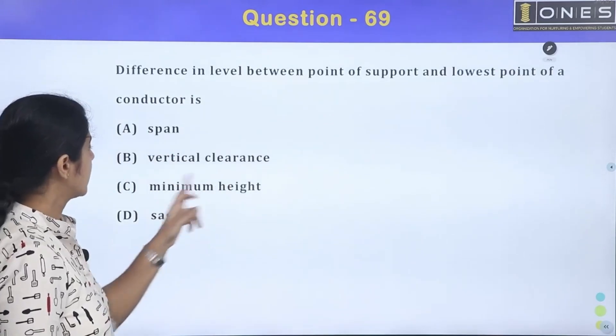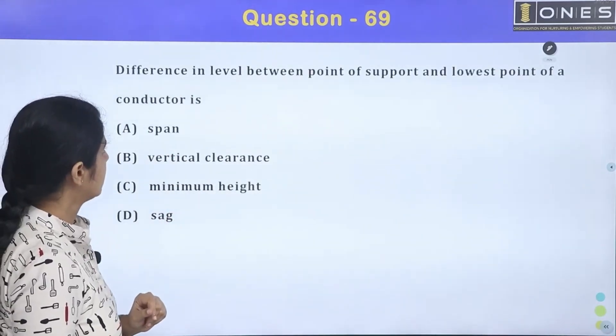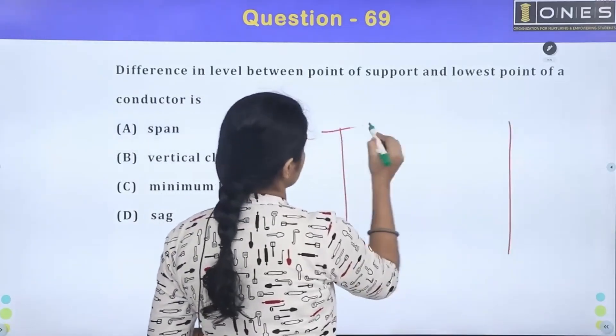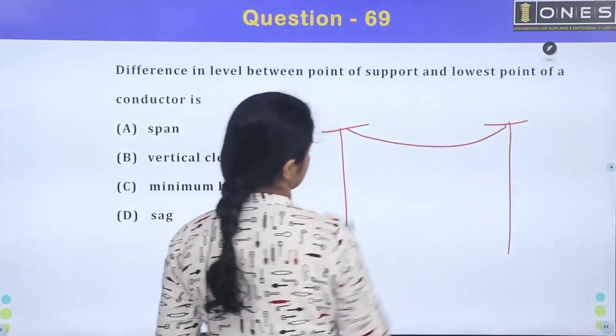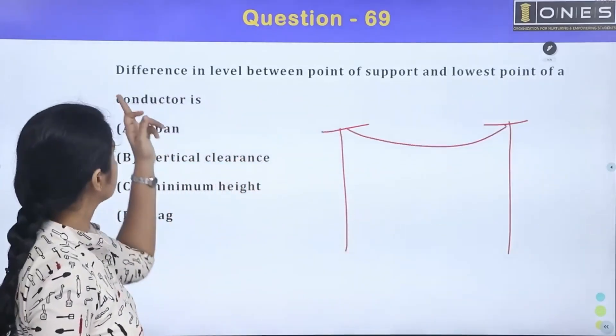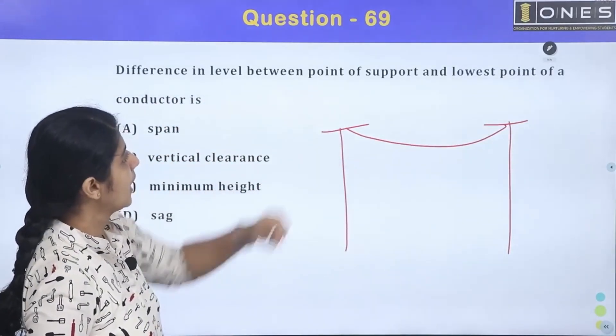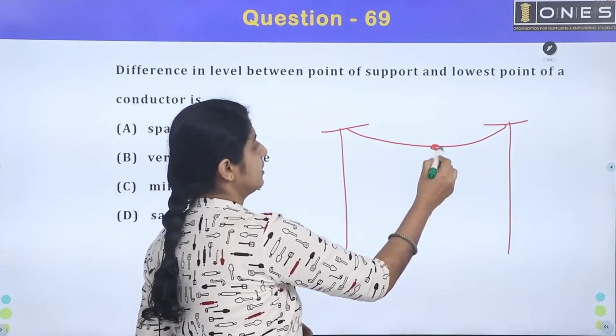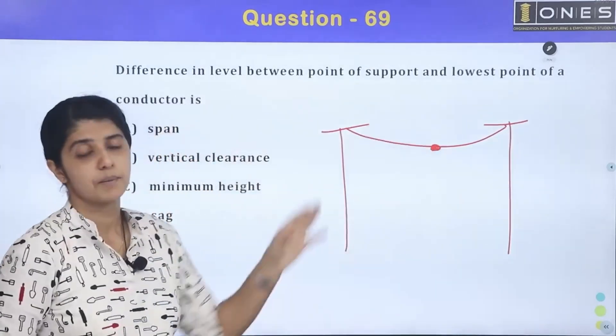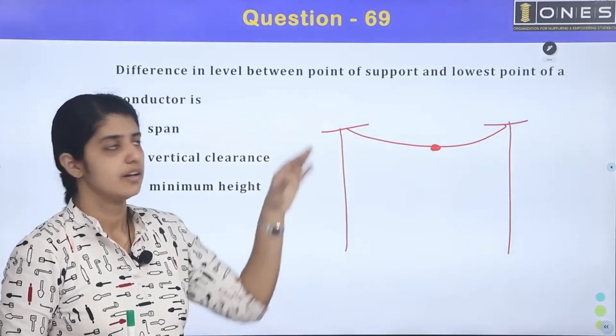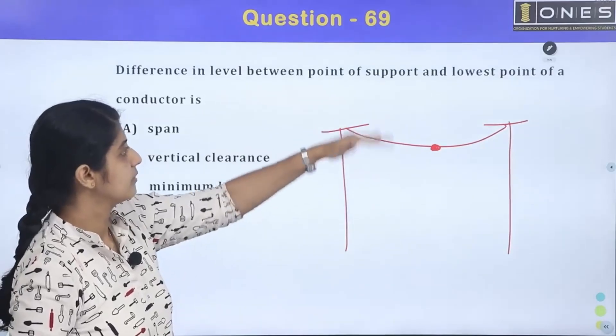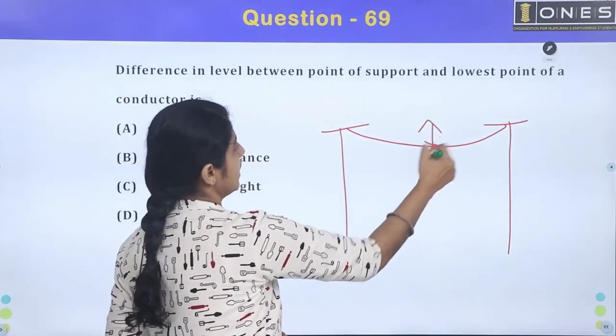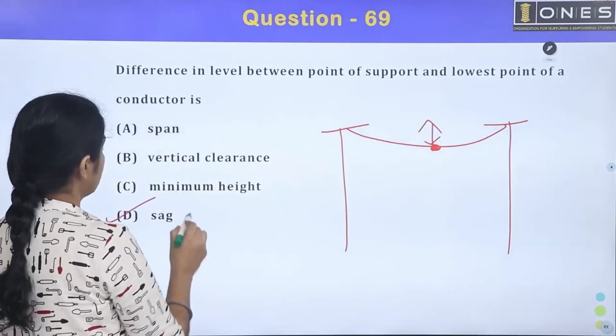Next question: difference in level between point of support and lowest point of a conductor. This is the supporting point, this is the distance. What is this difference? This difference is the sag of the conductor.